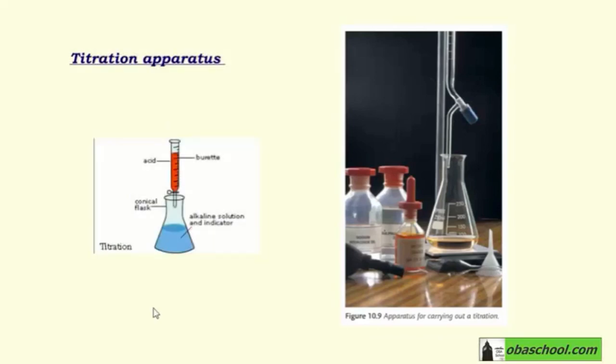This figure is more clear. So this is the burette. Usually it contains an acid and this is the conical flask containing an alkaline solution and indicator.